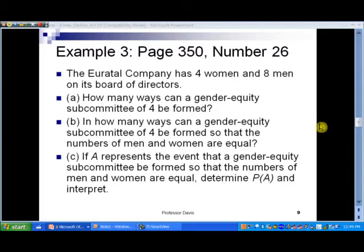And it says in part C, if A represents the event that a gender equity subcommittee be formed so that the numbers of men and women are equal, determine the probability of A and interpret the answer. All right.